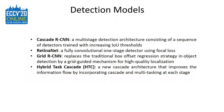For the base detectors in our system, we used four existing detection models published in recent years. Cascade RCNN is a multi-stage detection architecture consisting of a sequence of detectors trained with increasing IOU thresholds. RetinaNet is a fully convolutional one-stage detector using focal loss, which applies a modulating term to the cross-entropy loss in order to direct learning on hard negative examples. Grid RCNN replaces the traditional box-offset regression strategy in object detection by a grid-guided mechanism for high-quality localization. Hybrid Task Cascade is a new cascade architecture that improves the information flow by incorporating cascade and multitasking at each stage and leverages spatial context to further boost accuracy.